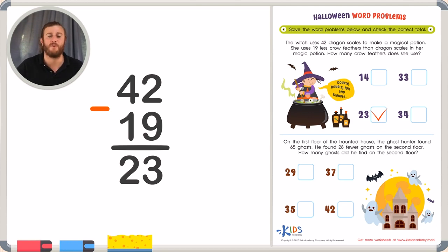Giving us 23 crow feathers in her magical potion. So one less scary tip is that when you see the word less than, the words less than, you can usually bet that it is a subtraction problem.